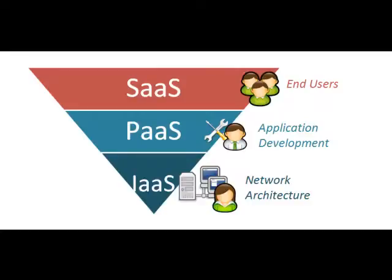Platform as a Service is not as common in state government. Lastly, Software as a Service, sometimes referred to as on-demand software, is where the software and associated data are hosted on the cloud and you access the software through a web browser. A common example here would be Google Apps. This service is common in federal and state government. While each option has its merits, it is important to think about what your office really needs and what capabilities and level of control is desired.